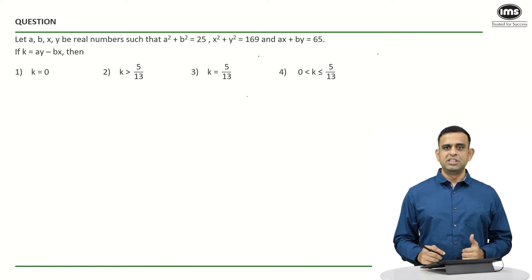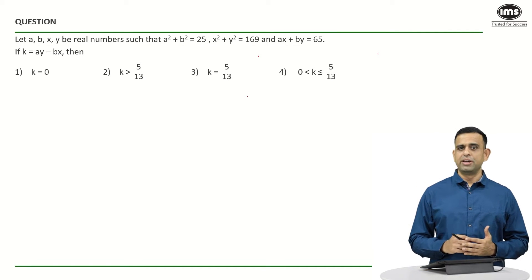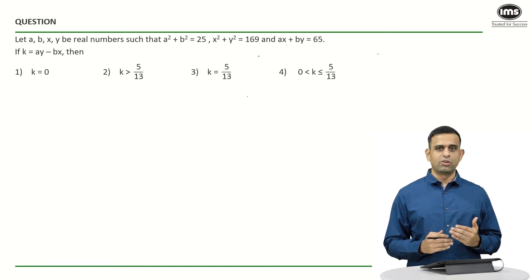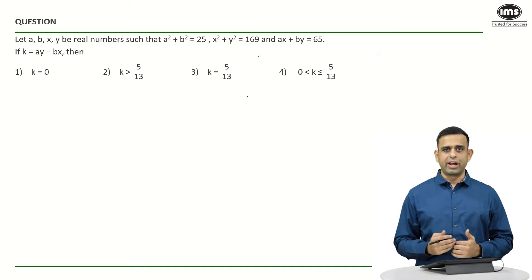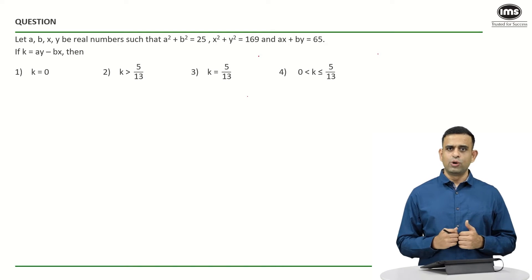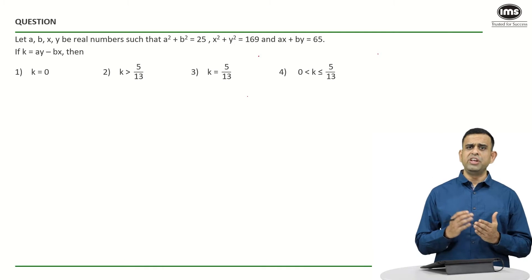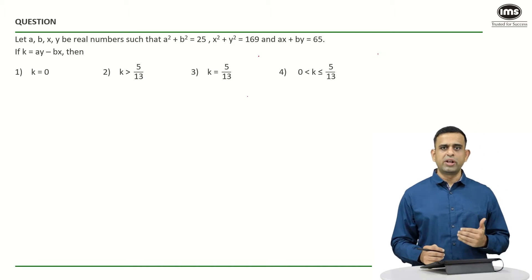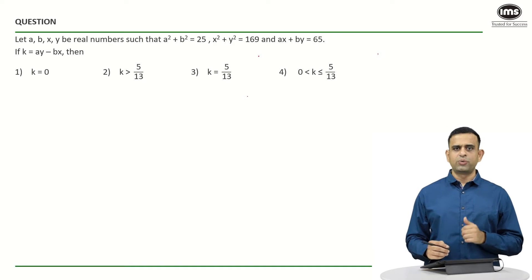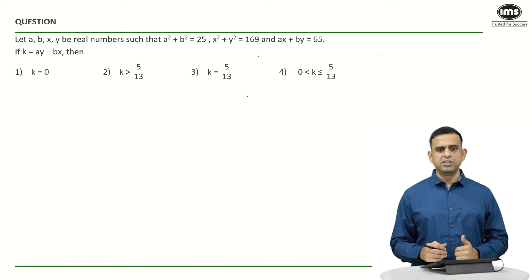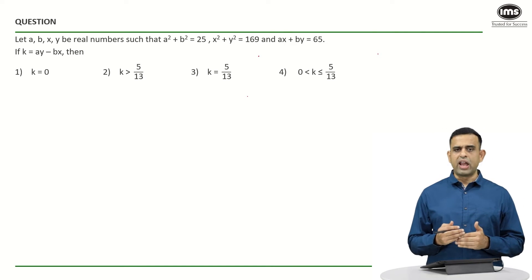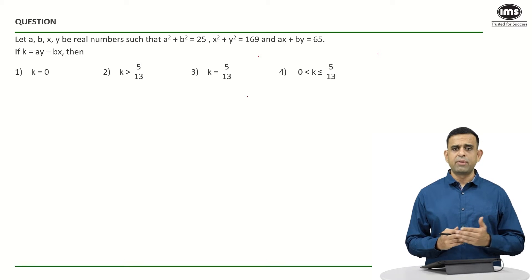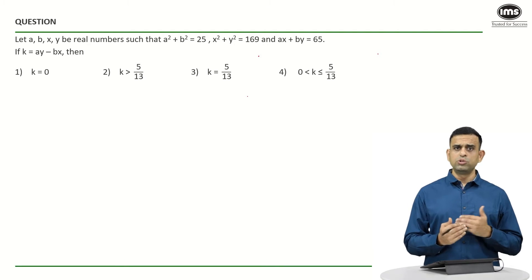Hi all, welcome to the Best of CAT series by IMS. I am Parmeshwar Sarma. Today we are going to look at a question on algebra — kindly give it a try and then resume the video. The question goes: let a, b, x, y be real numbers such that a² + b² = 25, x² + y² = 169, and ax + by = 65. The objective is to find the value of k, where k = ay − bx.